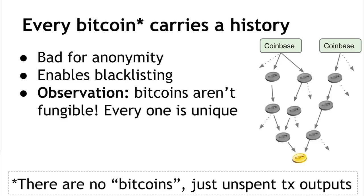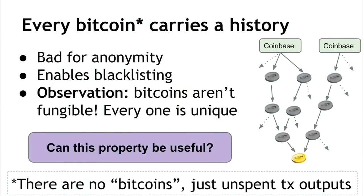There's an interesting observation here: Bitcoins aren't fungible. Fungible is an economic term meaning every Bitcoin has the same value as any other and they can be exchanged with no loss or change in value. But that's not exactly true — every Bitcoin is unique and has a different history, and if the history is meaningful to people, my one Bitcoin may not be the same as your one Bitcoin. However, I'll argue that this can be a very useful property if we give meaning to that history.